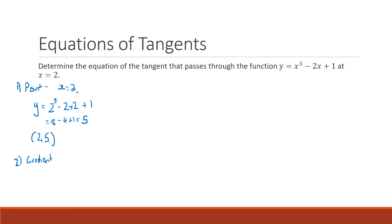To find our gradient we need our derivative. So dy/dx of our function: starting with x³, 3 comes to the front and the power goes down by one giving 3x². The derivative of −2x is just −2, and +1 derives to 0 because it's a constant. So our derivative function is 3x² − 2.